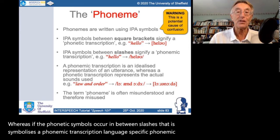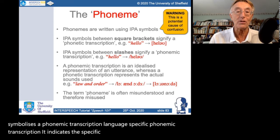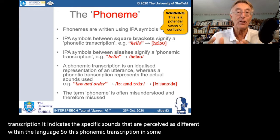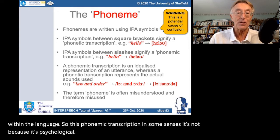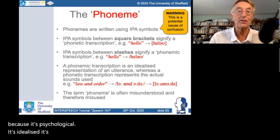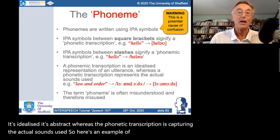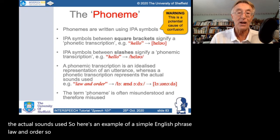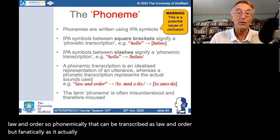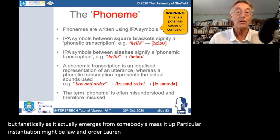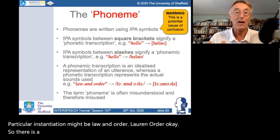A phonemic transcription indicates the specific sounds perceived as different within the language. In some senses it's idealized and abstract, whereas the phonetic transcription captures the actual sounds used. For example, the phrase 'law and order' — phonemically it can be transcribed one way, but phonetically, as it actually emerges from somebody's mouth, a particular instantiation might sound different. So there is a difference between the abstract form and the physical reality.